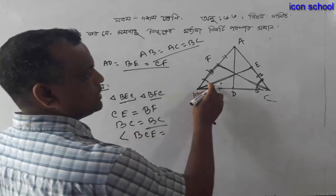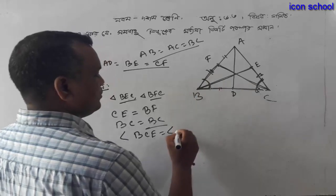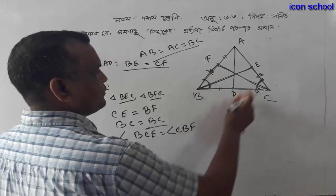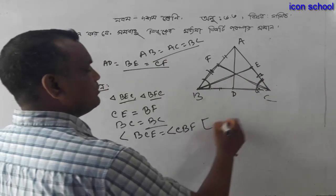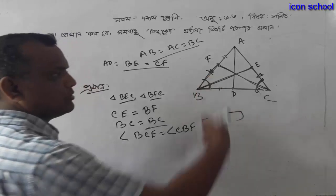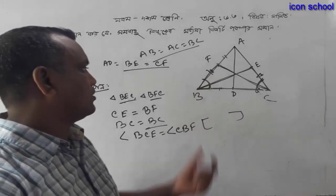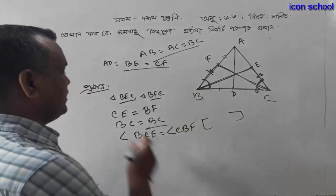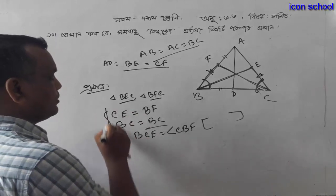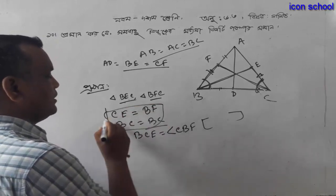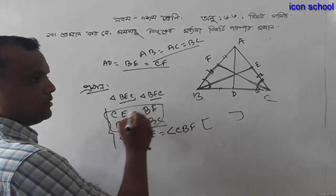So, that means a, c, b, f. That means a, c, b, f. Let's say some things. So, to answer your question, all of you will answer the question: a, 2, and 3? A, 2 and 3 are the same.